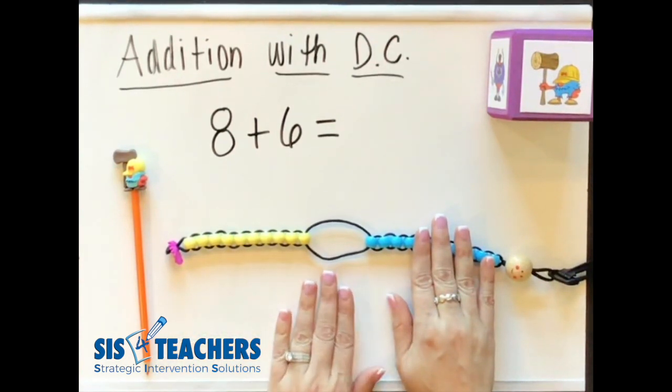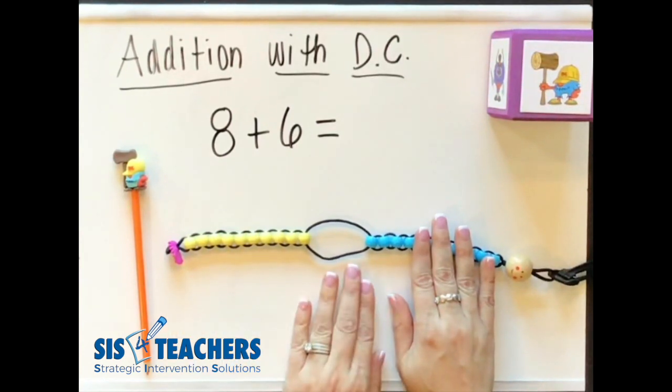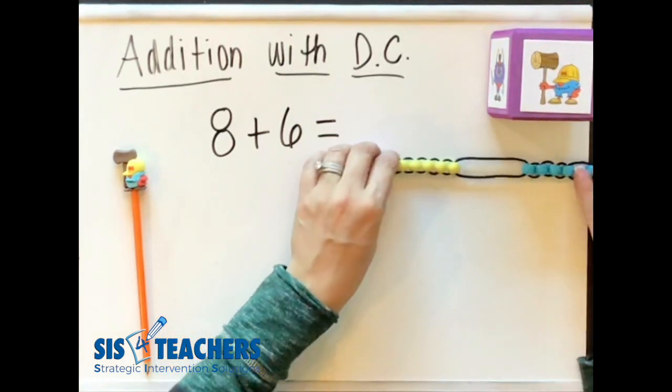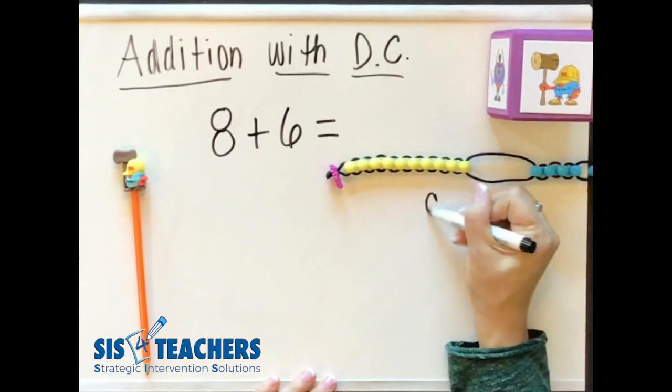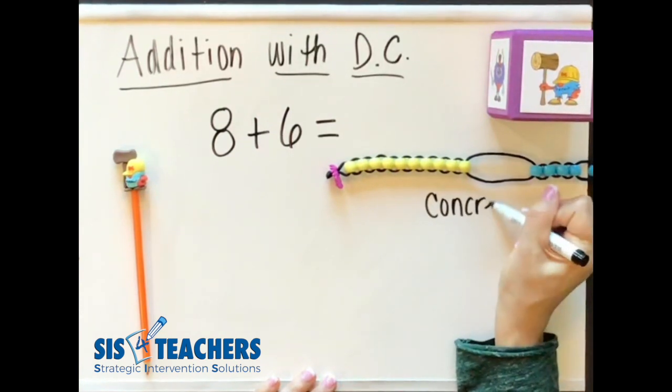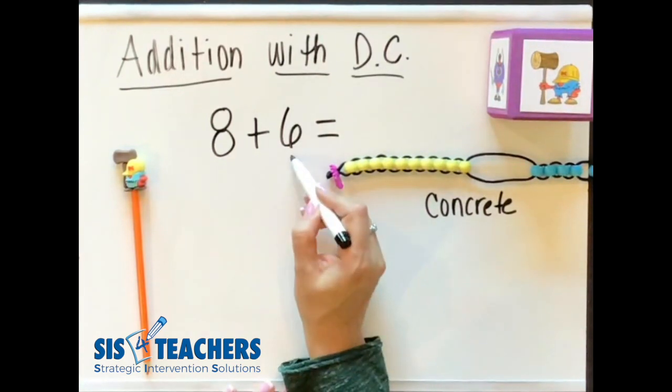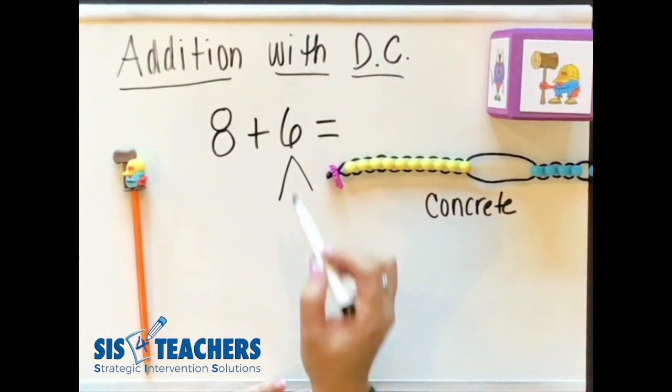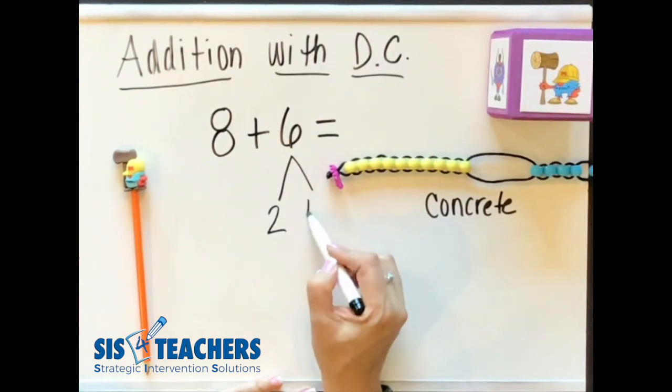This would be the concrete way. We want to teach through CPA for students to understand it concretely, pictorially, and then abstractly. So we're going to use our counting buddy over here and I'm going to label that as our concrete tool that we're going to be using. If we wanted to show this pictorially, we would draw a picture using our number bond to show what happened. We decompose the 6 into 2 and 4.